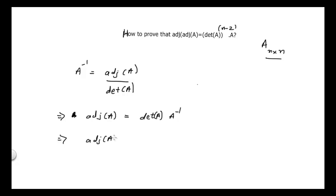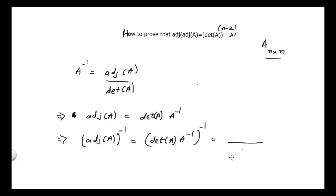Now I will take inverse on both sides. Taking inverse on both sides, I can write adjoint of A inverse is equal to determinant of A times A inverse, all to the inverse. Since determinant of A is a scalar quantity it goes to the denominator, and the inverse of A inverse is simply A. So adjoint of A inverse equals A divided by determinant of A. Let's mark this as equation number 1.